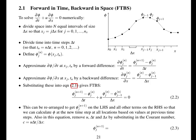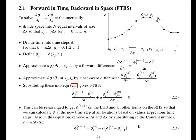To simplify, we substitute in the Courant number c equals U*delta_t over delta_x. Pause the video to write this down before checking your answer. The result is: phi at position j, time level n+1 equals phi at position j, time level n, minus the Courant number times (phi at position j, time n, minus phi at position j-1, time n).